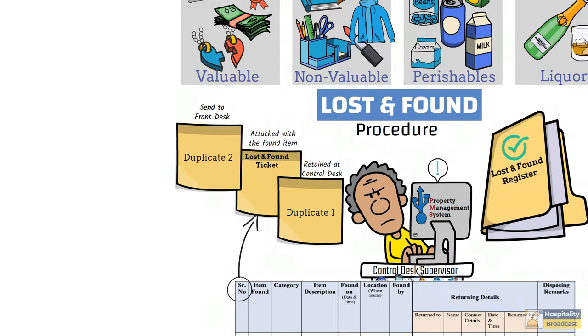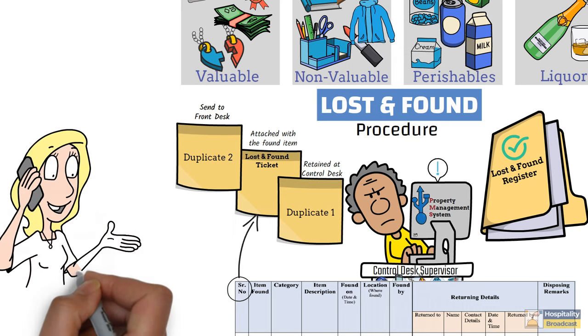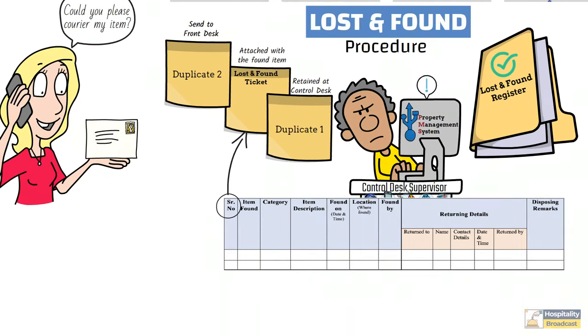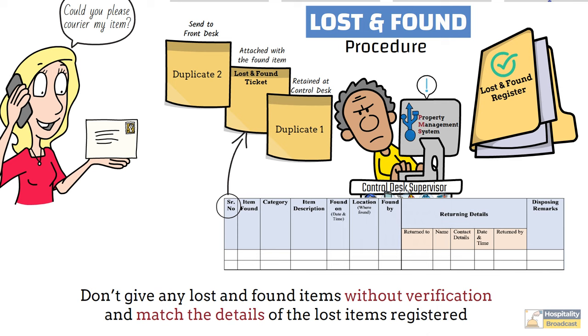Now, for lost and found items, either the guest visits the hotel to collect their items or on request it may be couriered. But do not give any lost and found item without verification and match the details of lost items with the details given by guest. Once the detail matches, get the signature of the guest on lost and found register and give it to the guest.